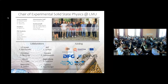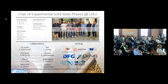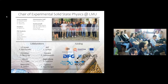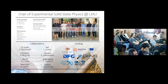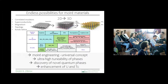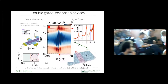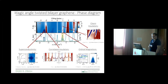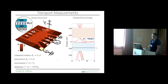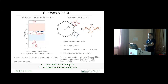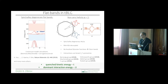Technical question about how the band structure of twisted bilayer graphene is computed — with 10,000 atoms in a unit cell, this is not DFT or any first-principles method. The answer is a continuum model by Alan MacDonald — if you google that you'll find the relevant paper.